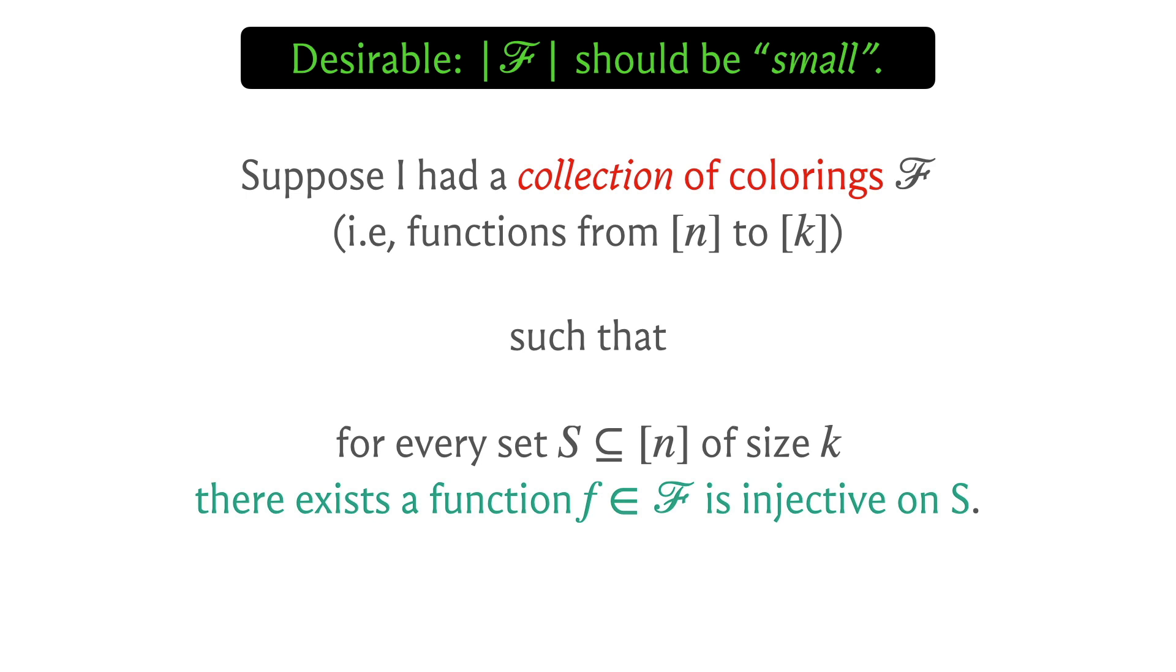Because you can imagine that you can come up with such a collection quite easily by simply going through every subset of size k and just coming up with a function that is specialized to that subset. So you could say look, I'm going to color this subset injectively and do something arbitrary on the rest, and this would be a perfectly valid collection. But it would have size n choose k, which is still not good enough for us. So we will not get into the construction of efficient collections that have this property, but let me at least just give you some intuition for why you hope to do better than this very naive approach that I just described.